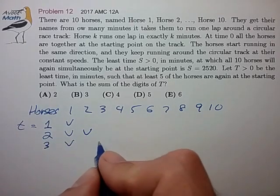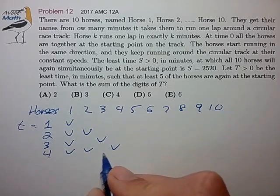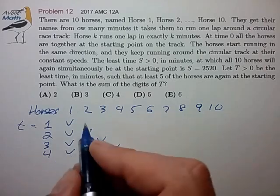At time three minutes, we got one and three. At time four, we have one, two, and four. And at time five, we'll have one and five.